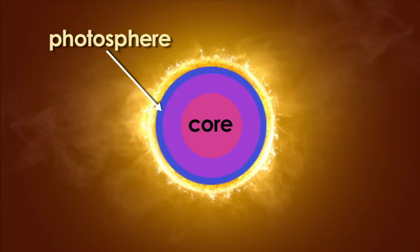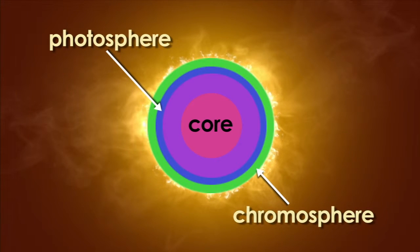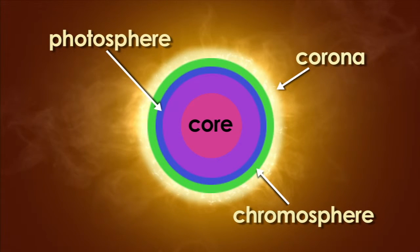The source of most of the Sun's light and heat is called the photosphere. Above the photosphere is the chromosphere, made up of flaming outbursts of gas. The outer atmosphere of the Sun is the corona.